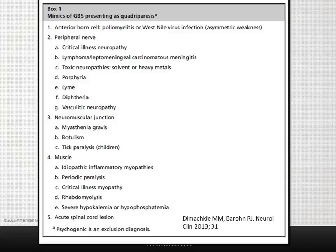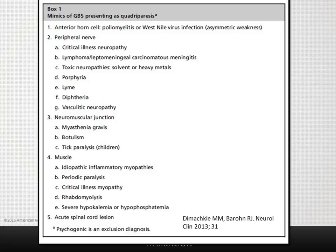Guillain-Barré presents as an acute lower motor neuron disorder with weakness and areflexia. Starting from the anterior horn cells: acute myelopathies, both compressive and non-compressive, are in the differential, especially with suspicion for a spinal cord level. In the acute phase, spinal shock produces flaccid limbs and absent reflexes, making it indistinguishable on tone and reflexes alone. Focal anterior horn cell disorders from paralytic poliomyelitis or West Nile virus infection may also cause a lower motor neuron paralytic presentation.